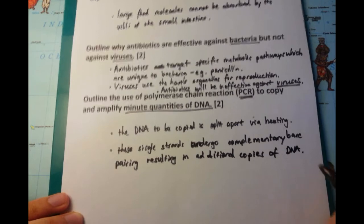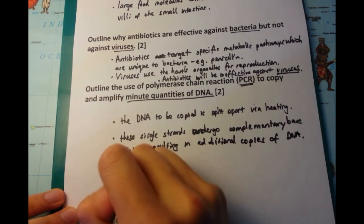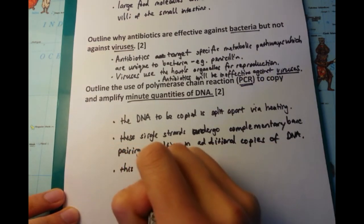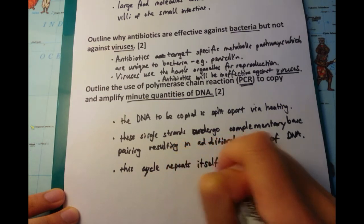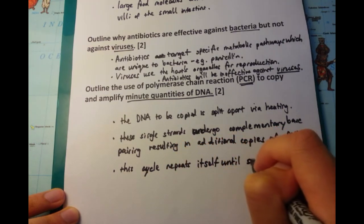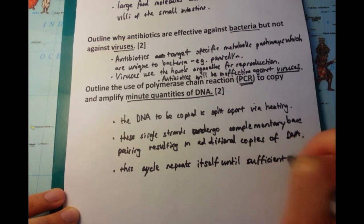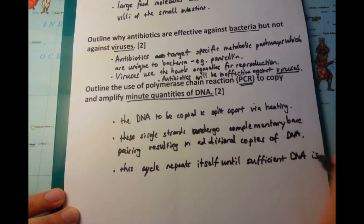Once this has happened once, then you can keep on repeating this cycle until sufficient DNA is produced. And by repeating this cycle, say eight, ten times, you can double it. If you double it once, twice, three times, eight different times, you'll get a large number of DNA at the end.